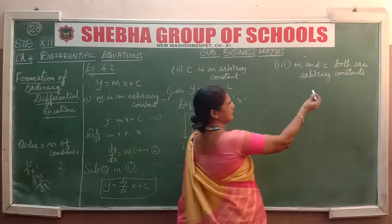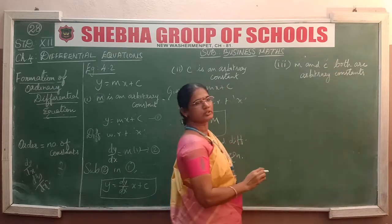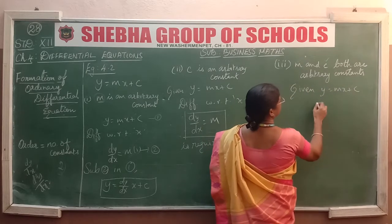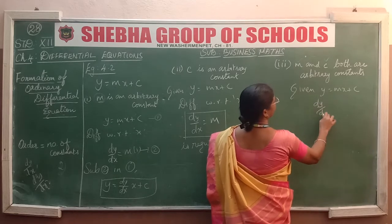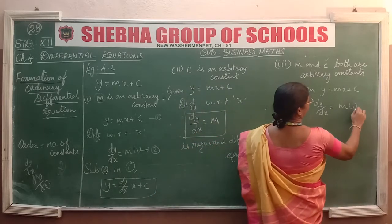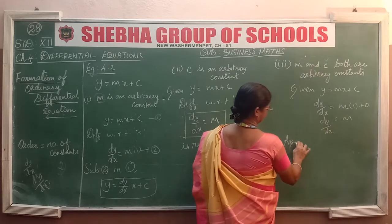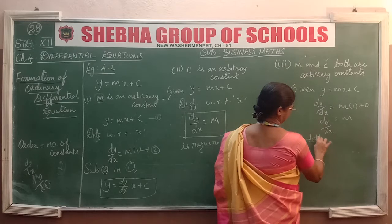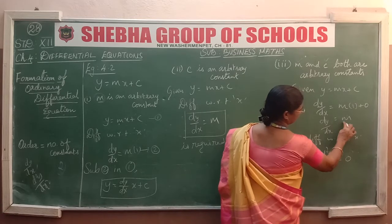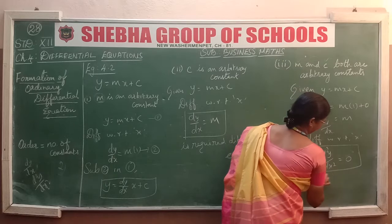The third subdivision has both m and c as arbitrary constants. So we have to eliminate both m and c. We differentiate two times. Given equation: y = mx + c. First differentiating with respect to x: dy/dx = m × 1 + 0, therefore dy/dx = m. Again differentiating with respect to x we get d²y/dx² = 0, since m is constant. This is the required differential equation.